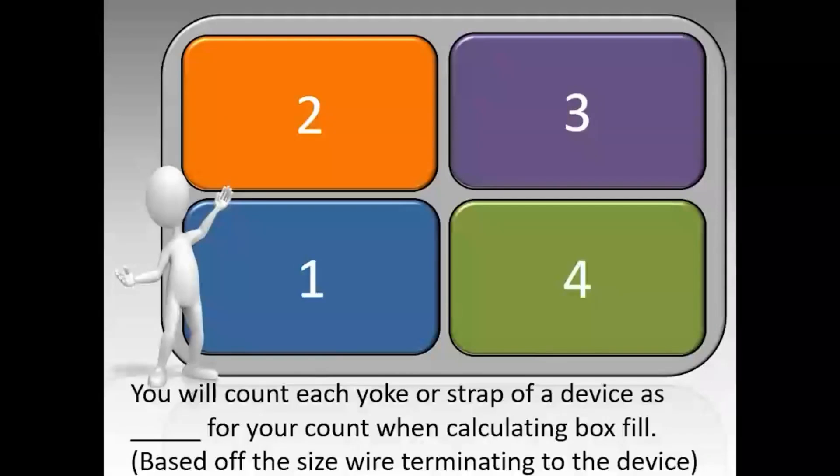So if you have a switch with 12 gauge wire to it, it's going to count as number 12s. If you have in the same box a switch with 14 gauge wire, that switch would count as 14s and the first switch would count as 12. And each yoke or strap of a device is going to count as 2 based off the size wire that's terminating to the device.